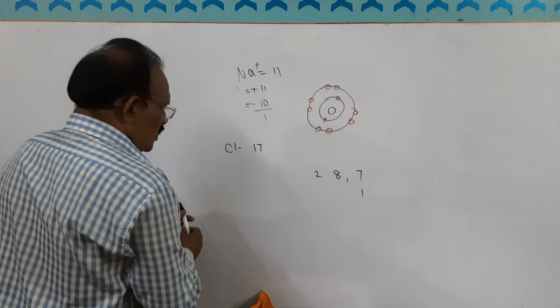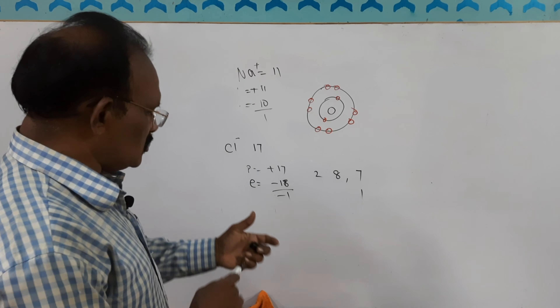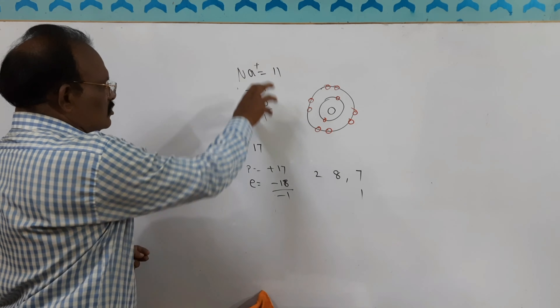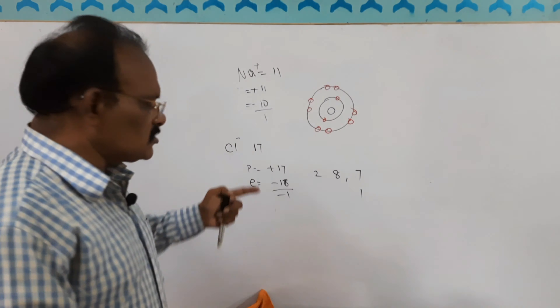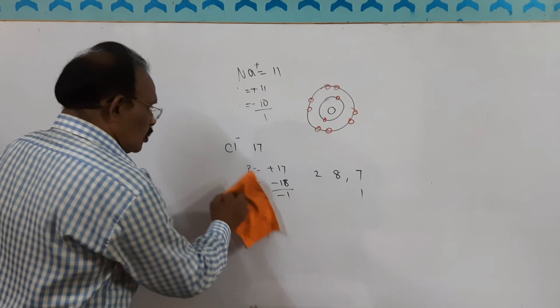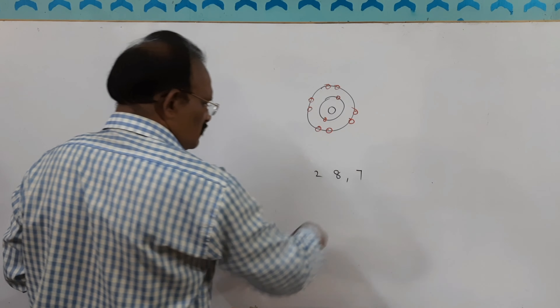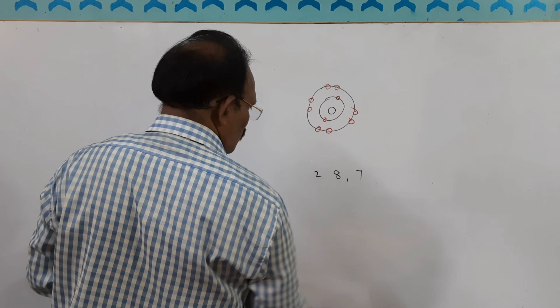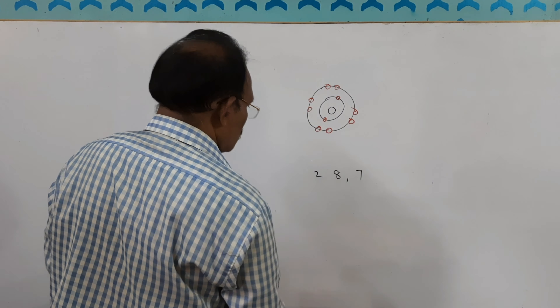Chlorine initially has 17 protons and 17 electrons. After gaining one shared electron, it now has 18 electrons. So 17 protons minus 18 electrons gives a charge of minus 1 — chlorine becomes negatively charged. This sharing of electrons forms ions — cations and anions. That is why in books you see chlorine with a minus sign and sodium with a plus sign: plus means they gave out electrons, minus means they gained electrons.